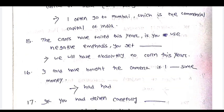The crops have failed this year. If you use negative emphasis, you get dash. Answer: We will have absolutely no crops this year.